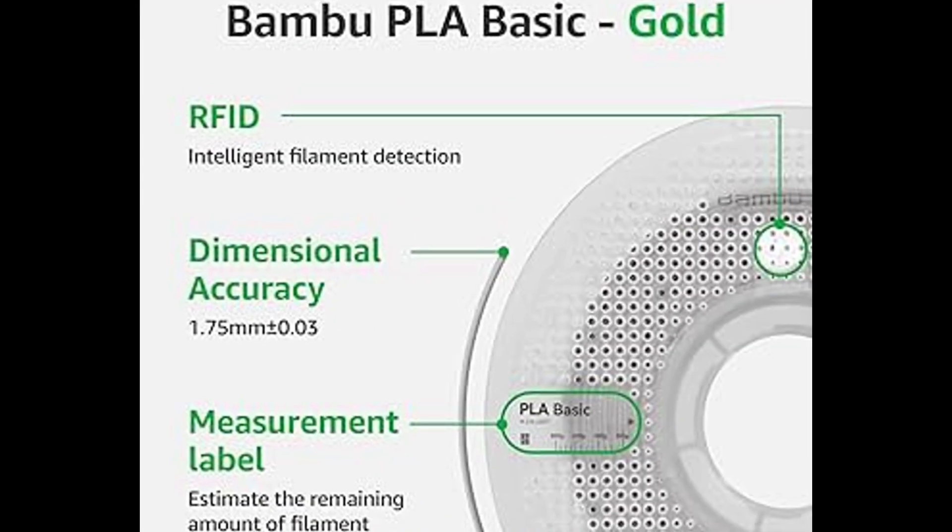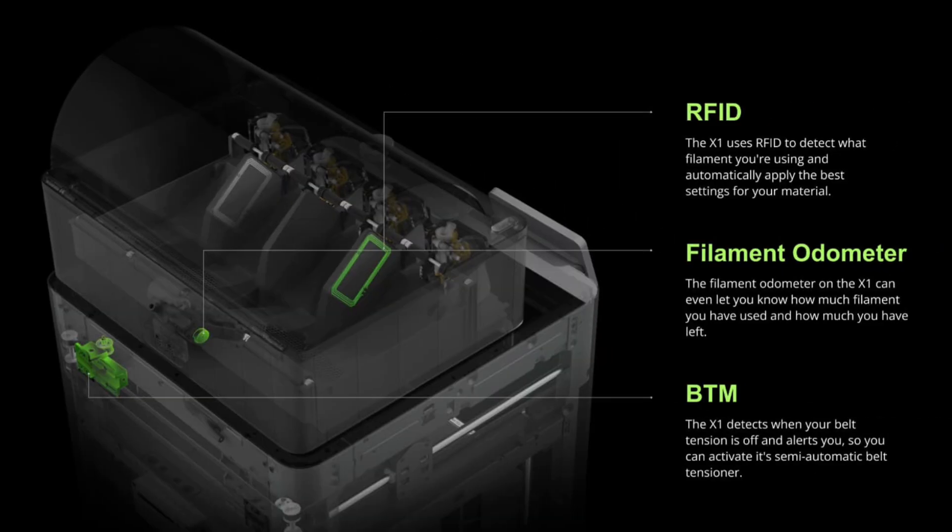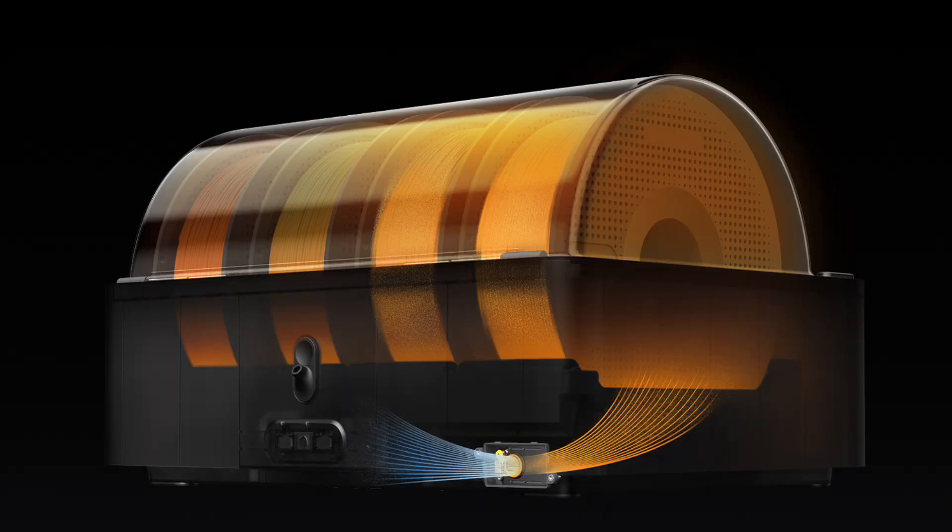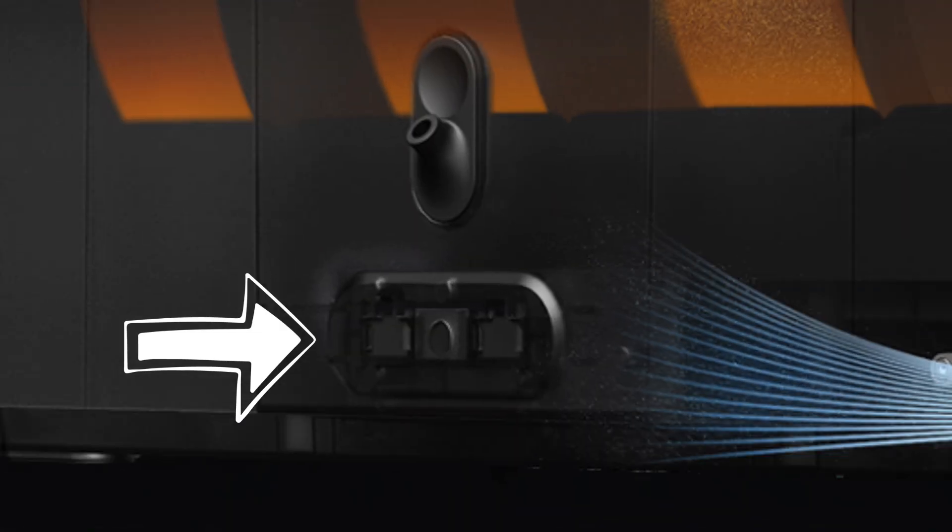One standout feature is RFID Sync. Simply load a spool and the AMS2 Pro automatically matches drying settings for Bamboo's official filaments—no manual input required. Accurate temperature and humidity sensors ensure your filament stays in optimal condition. Smart features equal smoother workflow.